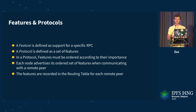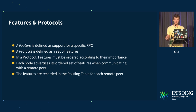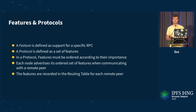When communicating with remote peers, I will indicate which features and RPCs I support. In the routing table, we now need to track one additional piece of information: in addition to peer ID and multi-address, we will also track the set of supported features.